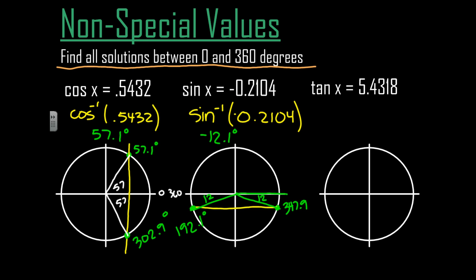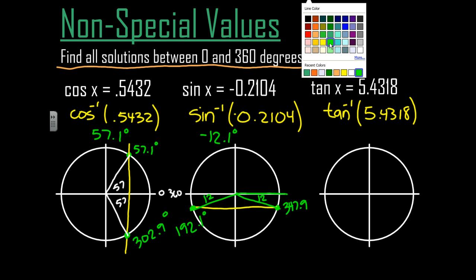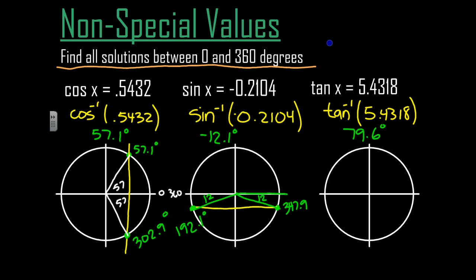So I'll type in inverse tangent of 5.4318. So we have the inverse tangent of 5.4318 gives me a value of 79.06 degrees. So that is on my unit circle somewhere up here, 79.6 degrees. Now this is a little bit tricky, but where else is the tangent positive? And so we found the tangent, remember, to be positive in, let's see here, our tangent is positive in this quadrant right here, and also in the first quadrant and the third quadrant down there.